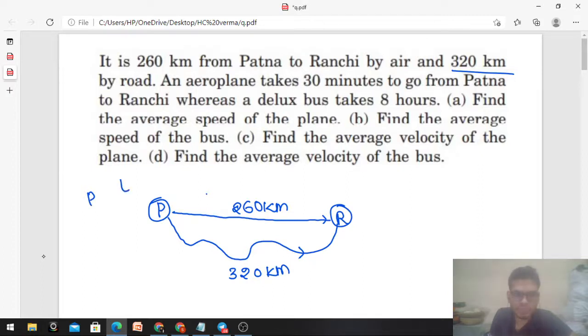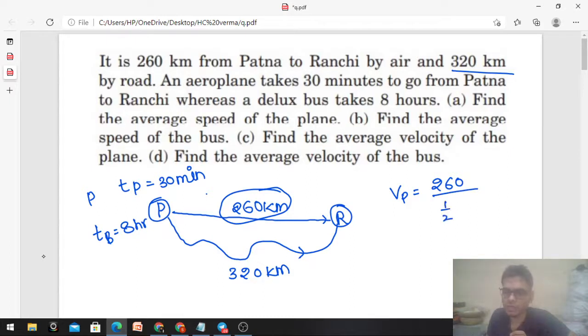What is the time taken by the plane? That is 30 minutes. Whereas the deluxe bus takes 8 hours. Find the average speed of the plane. So the first question is you have to find the average speed of the plane. Distance upon time: what is the distance? 260. The plane travels 260 distance and time is half hour, 30 minutes means half hour. It is coming out to be 520 kilometer per hour.